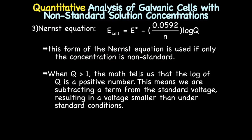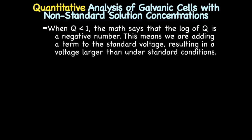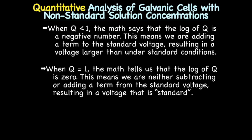With the simplified Nernst equation, when Q is greater than 1, the log of Q is a positive number, meaning we subtract a term from the standard voltage, resulting in a voltage smaller than under standard conditions. When Q is less than 1, the log of Q is a negative number, meaning we add a term to the standard voltage, resulting in a voltage larger than standard. When Q equals 1, the log of Q is 0, and the resulting voltage equals the standard value.